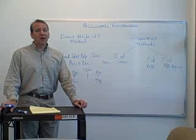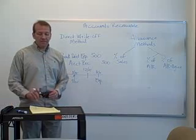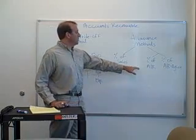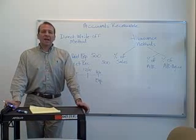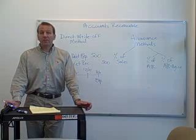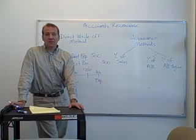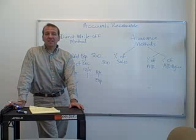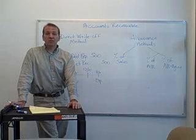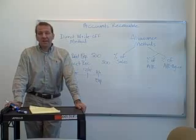The direct write-off method is typically not used unless you have very, very few write-offs, or if you're a very small company. What we're going to emphasize in this chapter is the allowance method, where we estimate how much is uncollectible. We're going to introduce a new account: the allowance for bad debts, or the allowance for doubtful accounts, which is a contra-asset account. So if we had accounts receivable of $200,000 and $2,000 in the allowance for doubtful accounts credit balance, then our net accounts receivable would be $200,000 less $2,000, which equals $198,000.